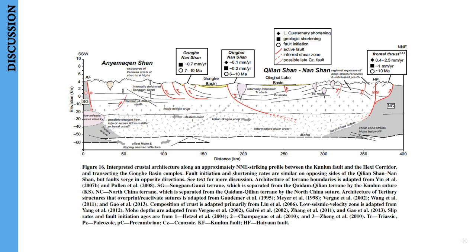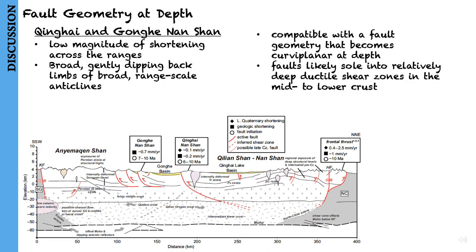Finally, let's talk about the discussion section of this paper. With data from this paper and constraints from previous studies, they present their interpreted crustal architecture along a north-northeast striking profile between the Kunlun Fault and the Hoshi Corridor transecting the Gonghe Basin Complex.